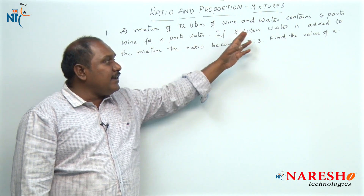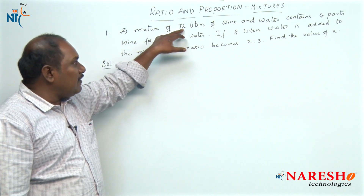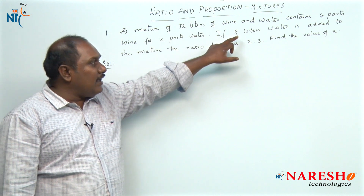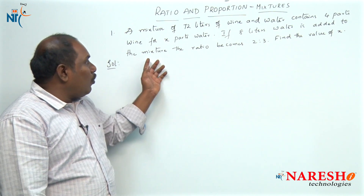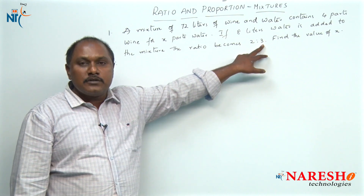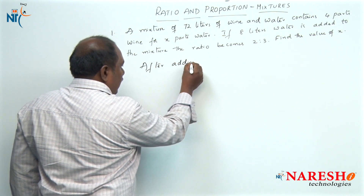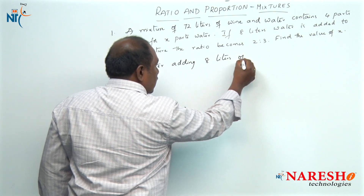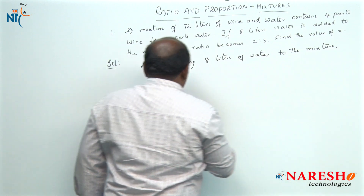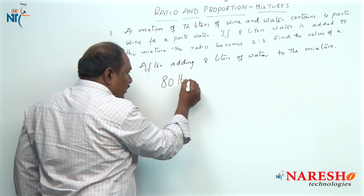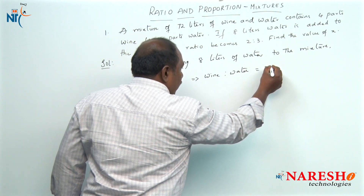The next statement is: if 8 liters of water is added to the mixture, already we have 72 liters of mixture. If we add 8 liters of water, the total quantity of the mixture becomes 80 liters. In that 80 liters, wine and water will be in the ratio of 2 is to 3.